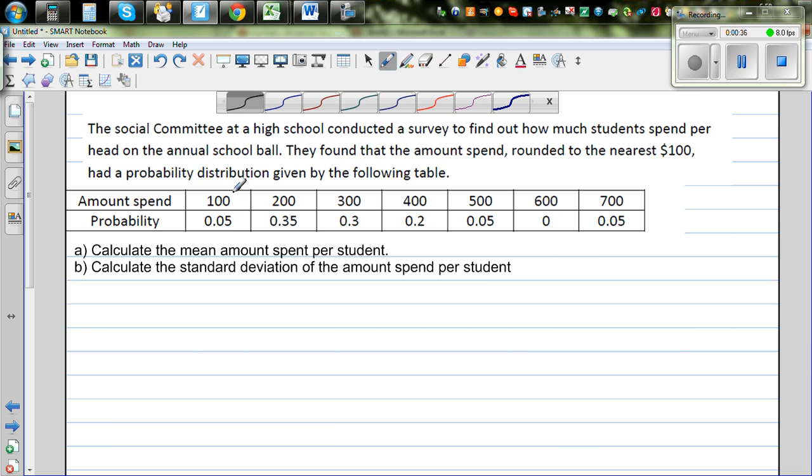The probability that a student spends $100 is 0.05, or in terms of percentage, 5% of the students are spending $100. 35% spend $200, 30% spend $300, and so on. From this information, we want to calculate the mean and the standard deviation.